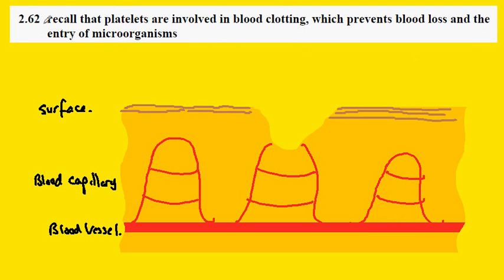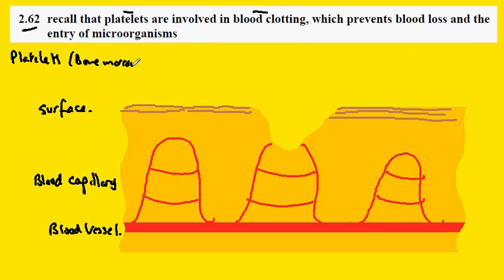IGCSE Biology, syllabus statement 2.62. We're looking at platelets and clotting. Platelets are produced in the bone marrow and they're actually just fragments of cells.